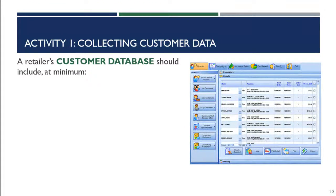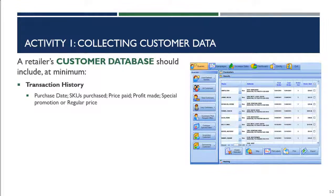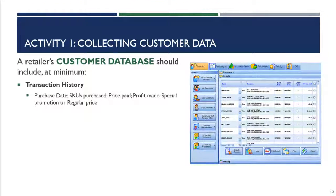When we're collecting data on our customers, our database should include, at minimum, certain basic data. The first thing is a transaction history. When we're talking about transaction history, some of the things we want to know: When did our customers shop? What are their purchase dates? What did they purchase on that shopping trip — the SKUs or individual items? We want to know the price they paid, the amount of profit we made, and whether the purchase was part of a special promotion or at regular price.